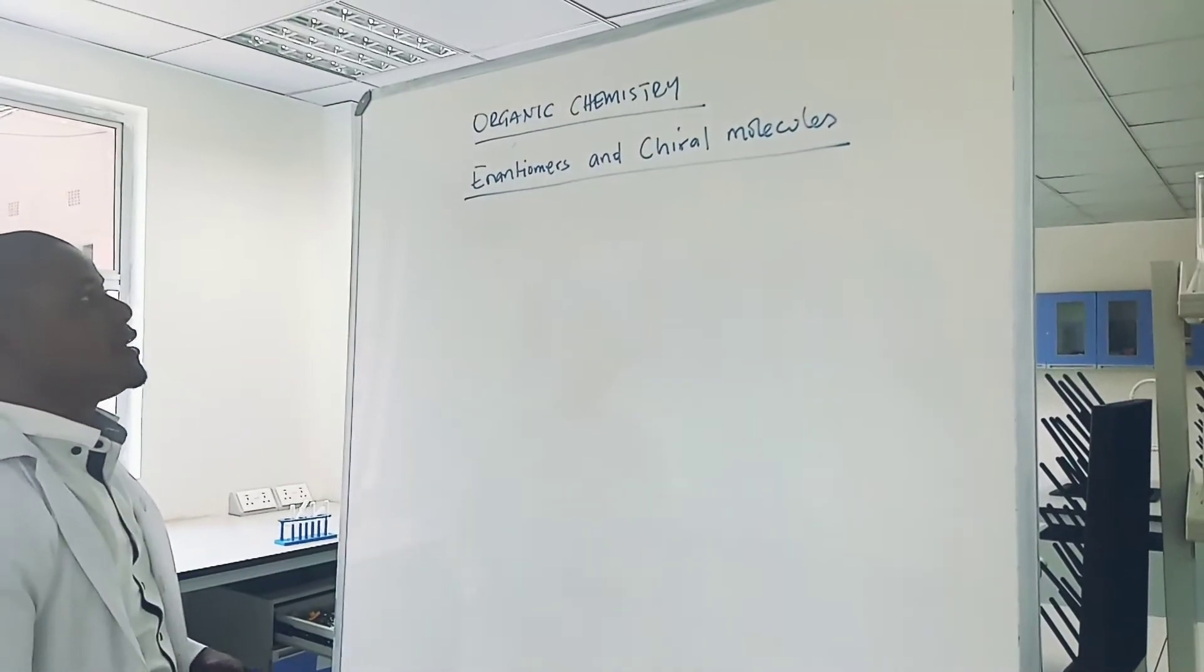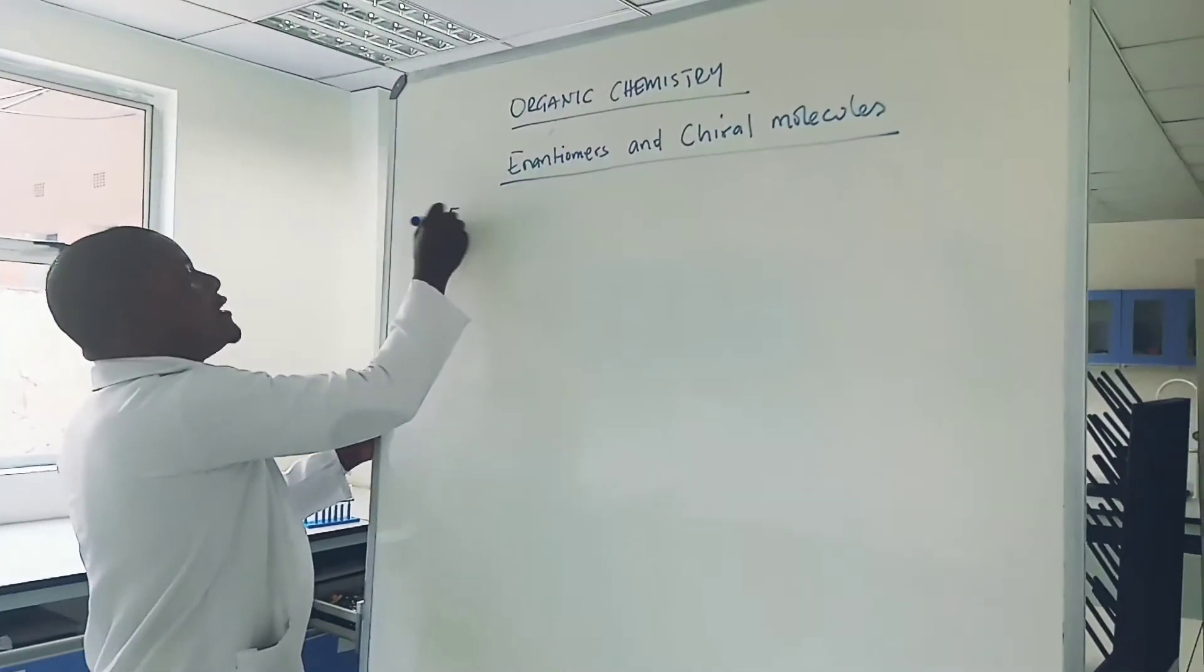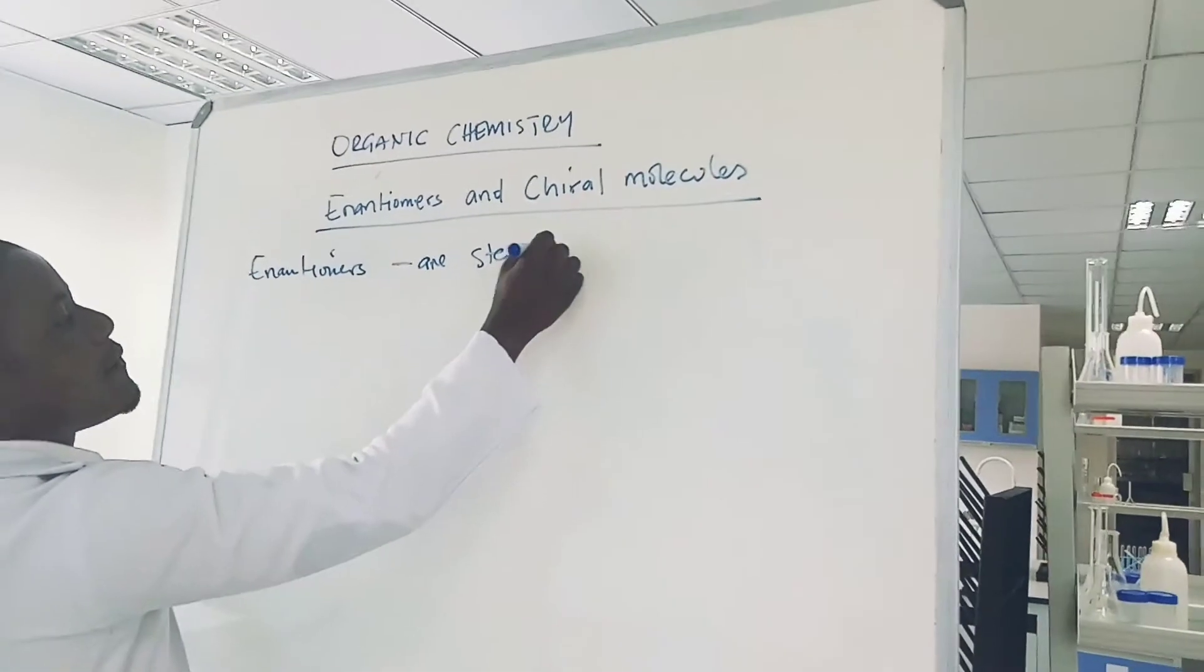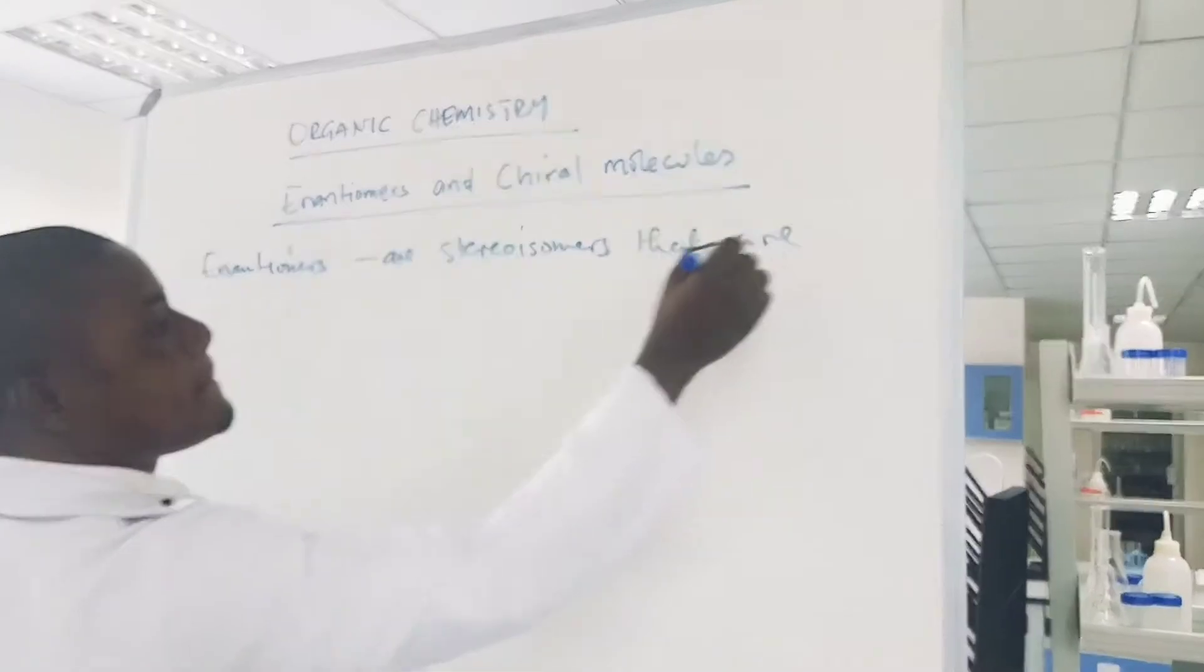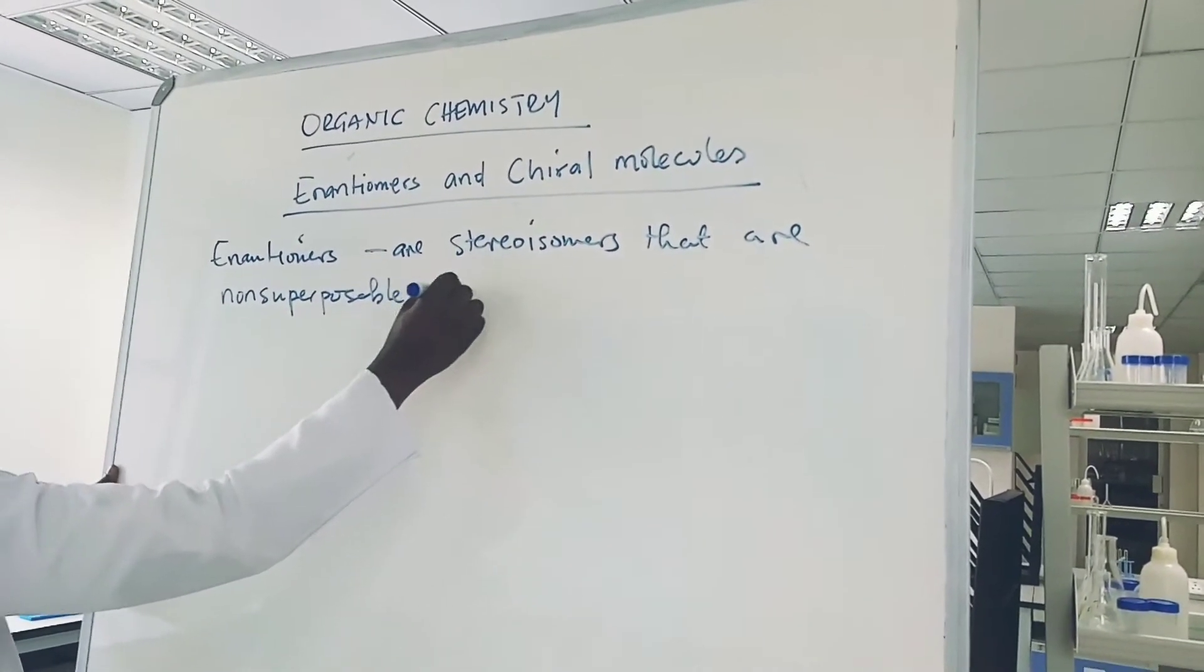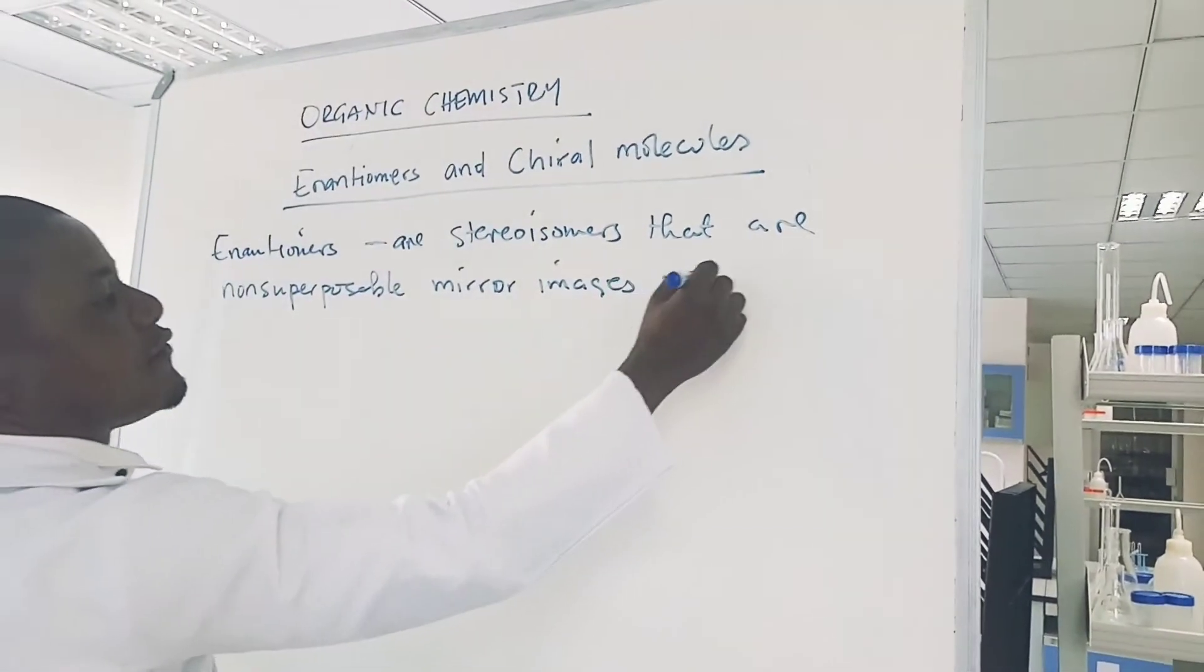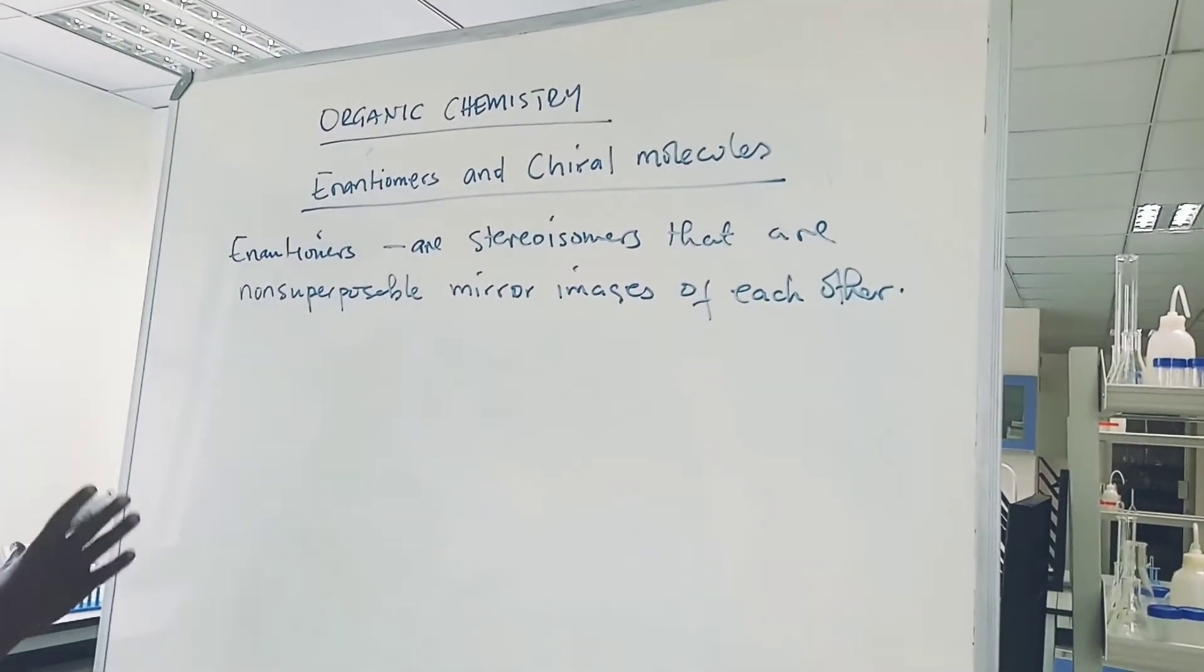We shall look at enantiomers and chiral molecules. Enantiomers are stereoisomers that are non-superposable mirror images of each other. This is how we can define enantiomers.